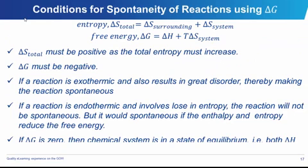We have a chemical formula on the screen indicating the conditions for the spontaneity of reactions. For any chemical reaction to be spontaneous, it is required that the total entropy must increase. And for total entropy to increase, looking at the formula on the screen, we notice that we have to have ΔG, which is the free energy change, be negative.